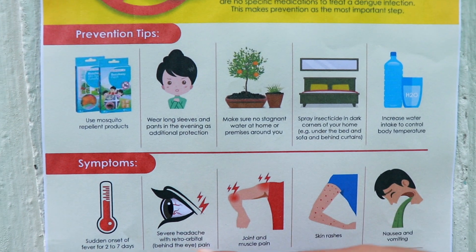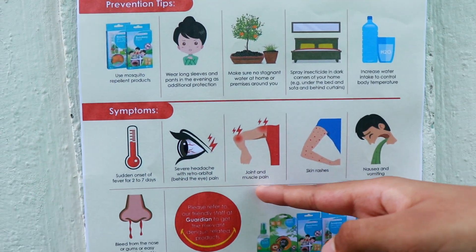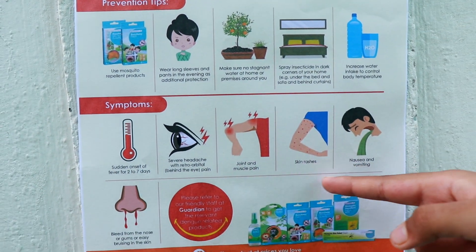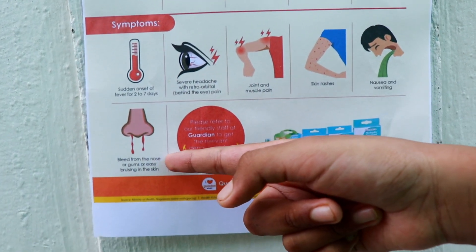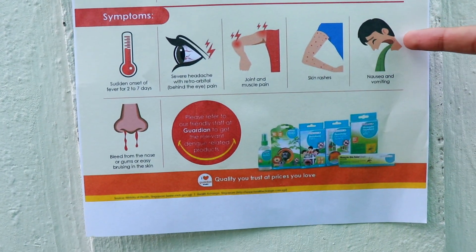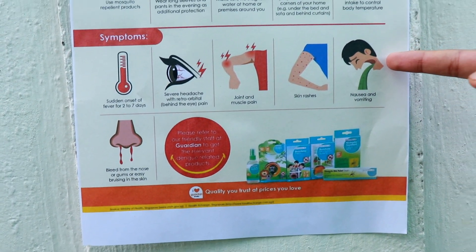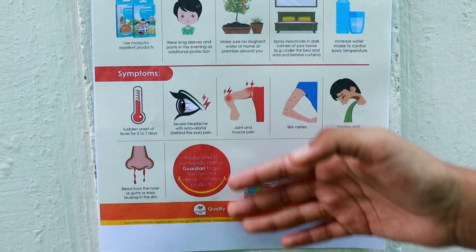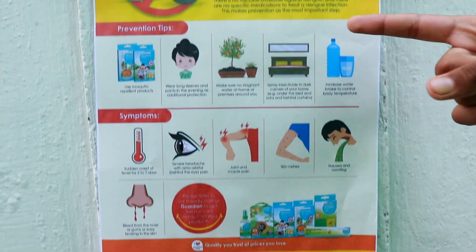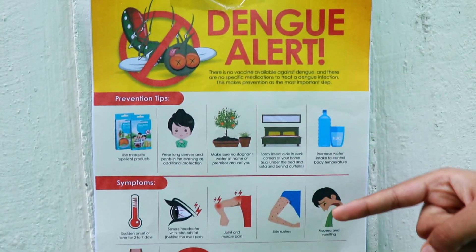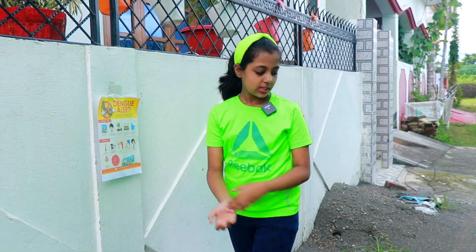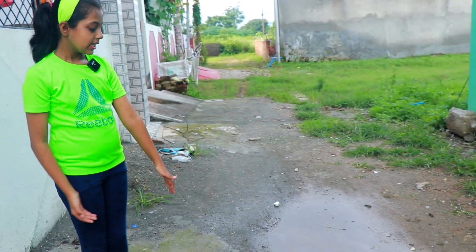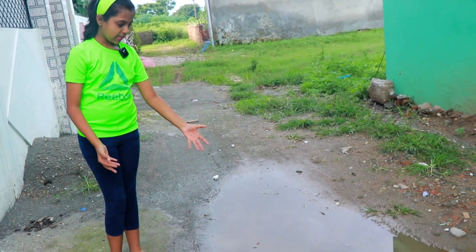These are the symptoms of dengue and malaria — for example, blood coming from your nose and vomiting. You have to follow the prevention tips on the poster, not ignore them.